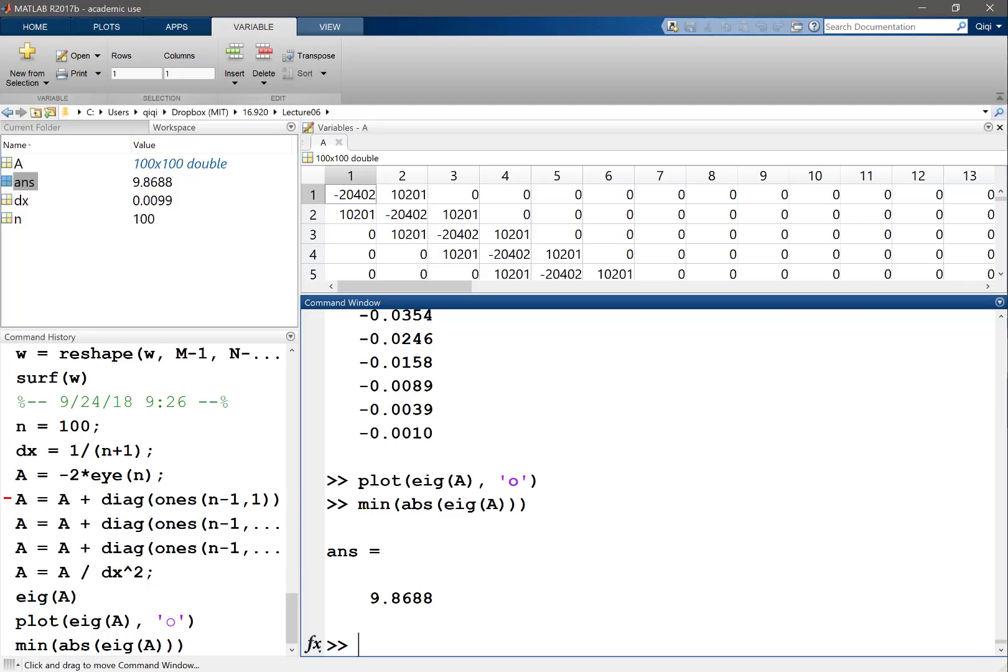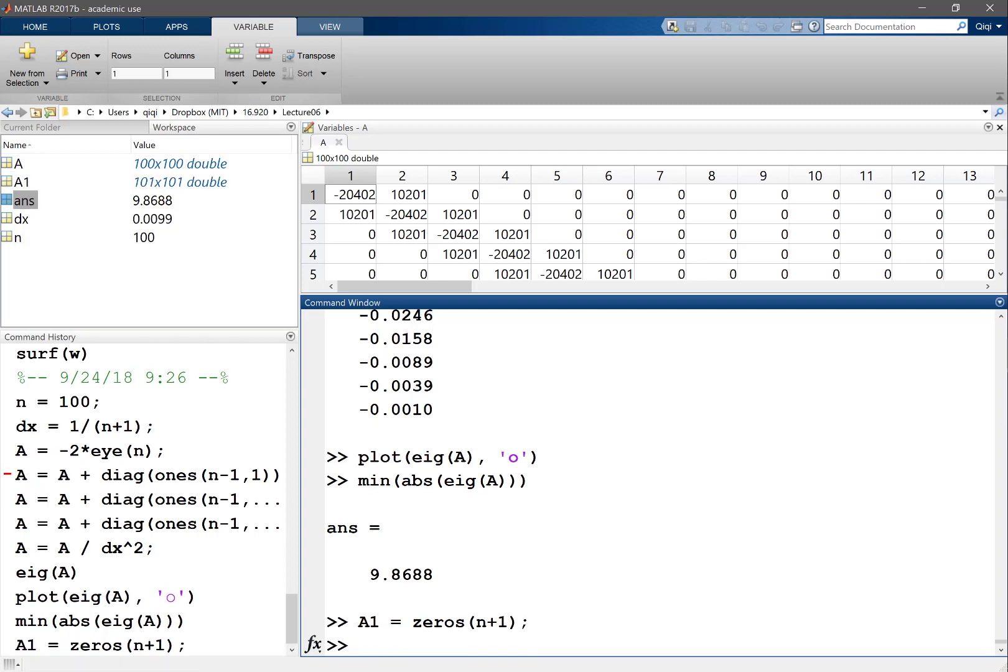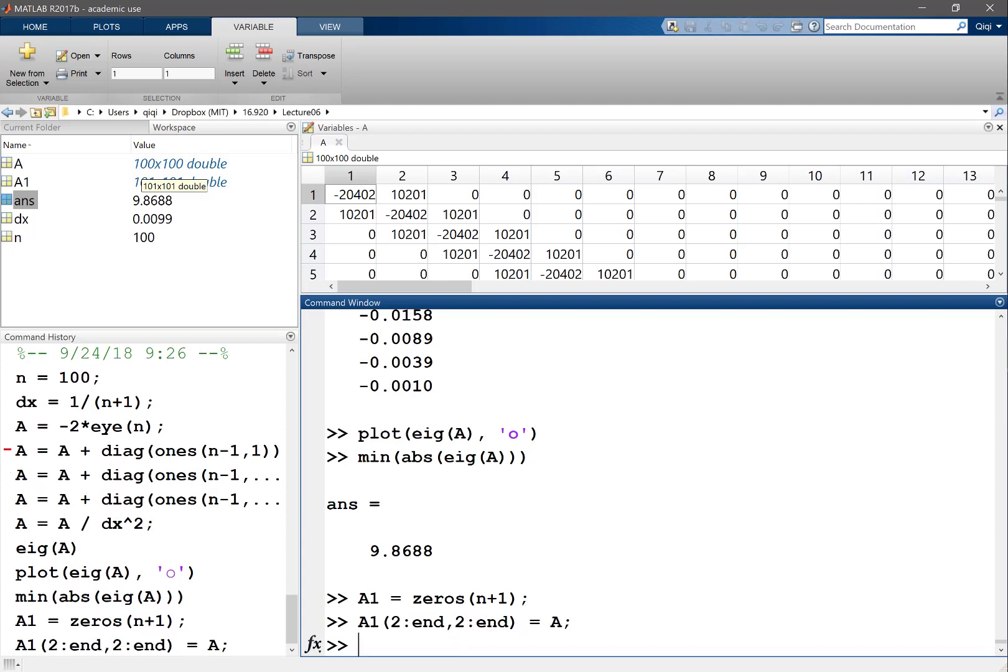So let's see how that affects our stability. And so what we have to change is that A is equal to, well, so let's make another A1, make it zeros, now in this case n plus 1, right? So my A1 is now a bigger matrix. So let's say A1 of 2 to n, 2 to n is equal to the original A.